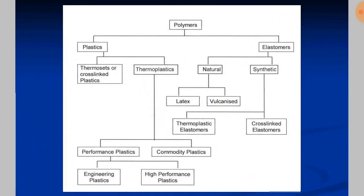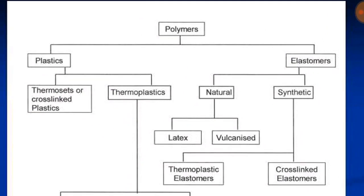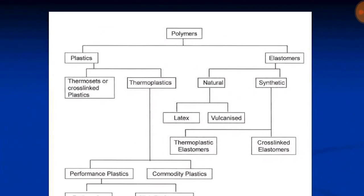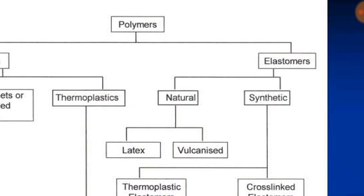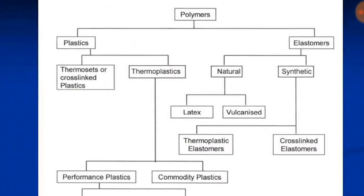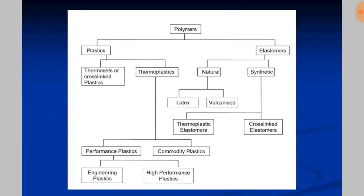Polymers are divided into two types: plastics and elastomers. Plastics are further divided into thermoset plastics — which cannot recover to their original state when heated — and thermoplastics, whose shape can be changed by heating and cooling multiple times. Thermoplastics include performance plastics and commodity plastics; performance plastics include engineering plastics and high-performance plastics. Elastomers are divided into natural and synthetic; natural includes latex, vulcanized forms, while synthetic includes thermoplastic elastomers and cross-linked (thermosetting) elastomers.